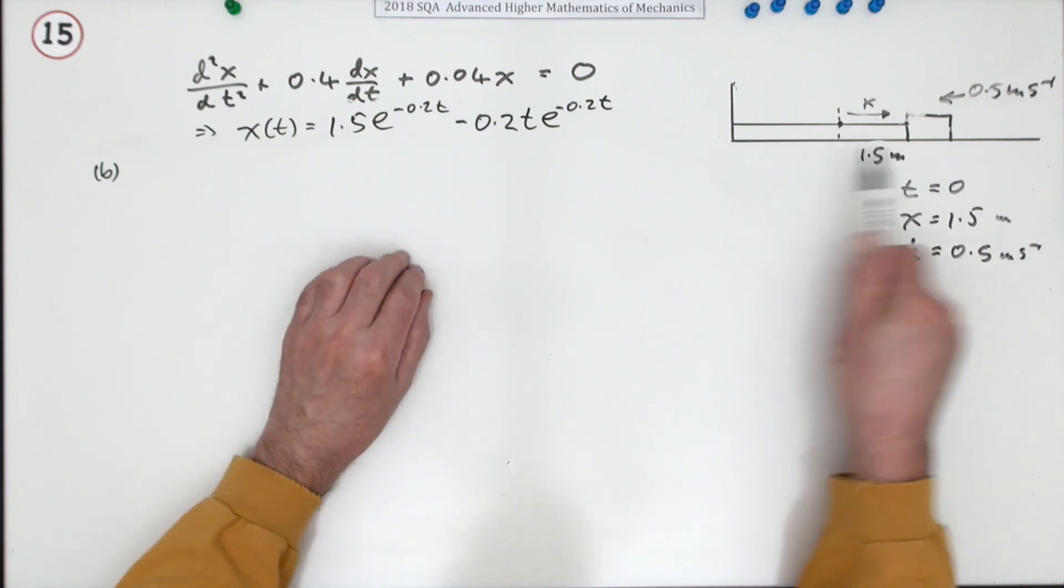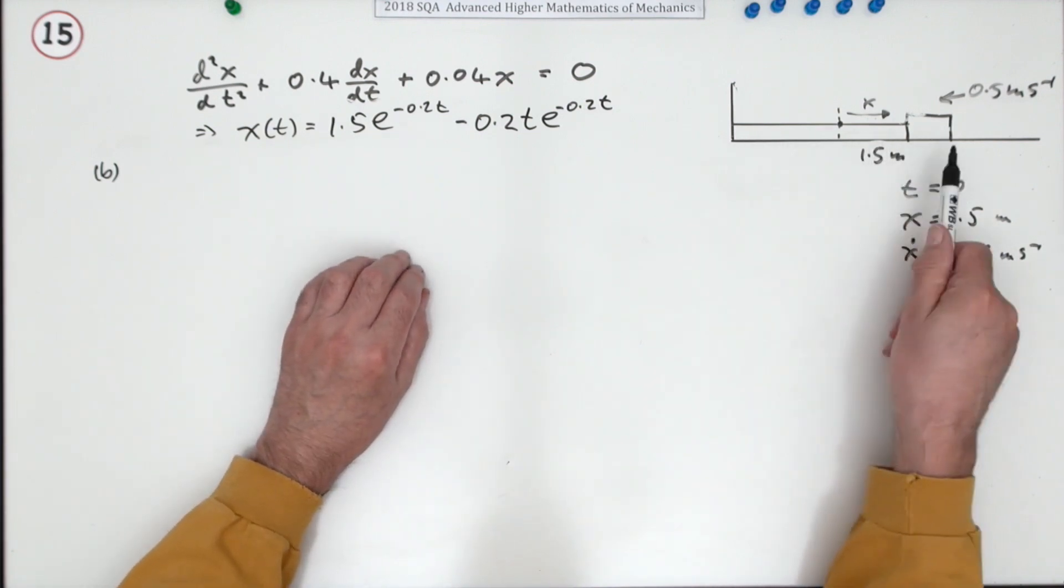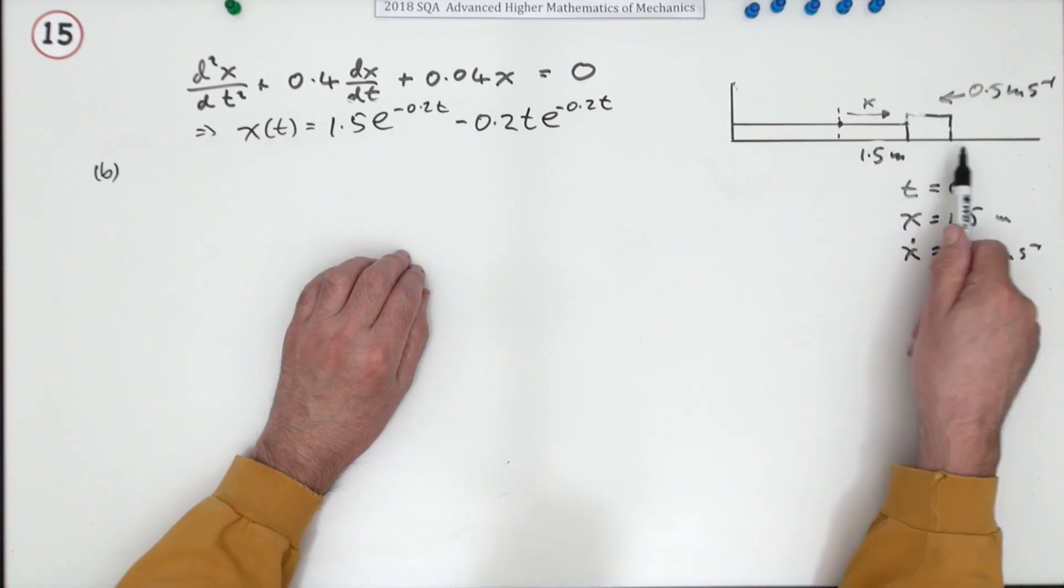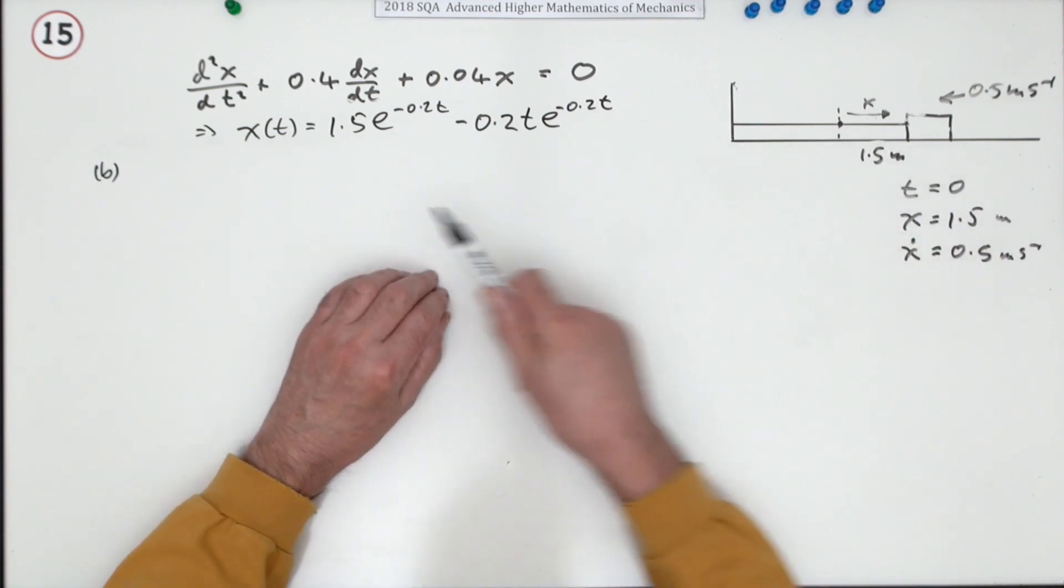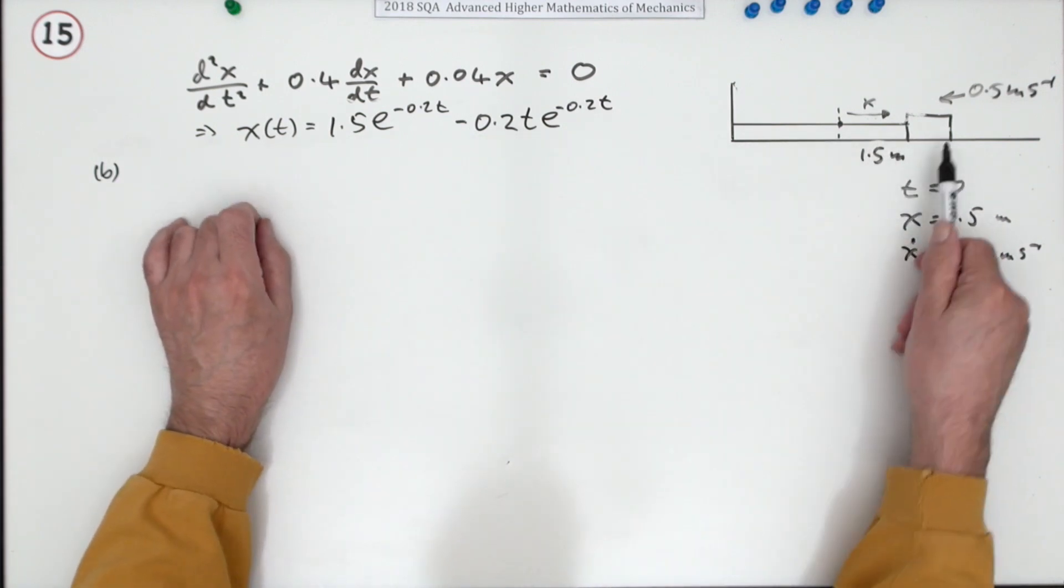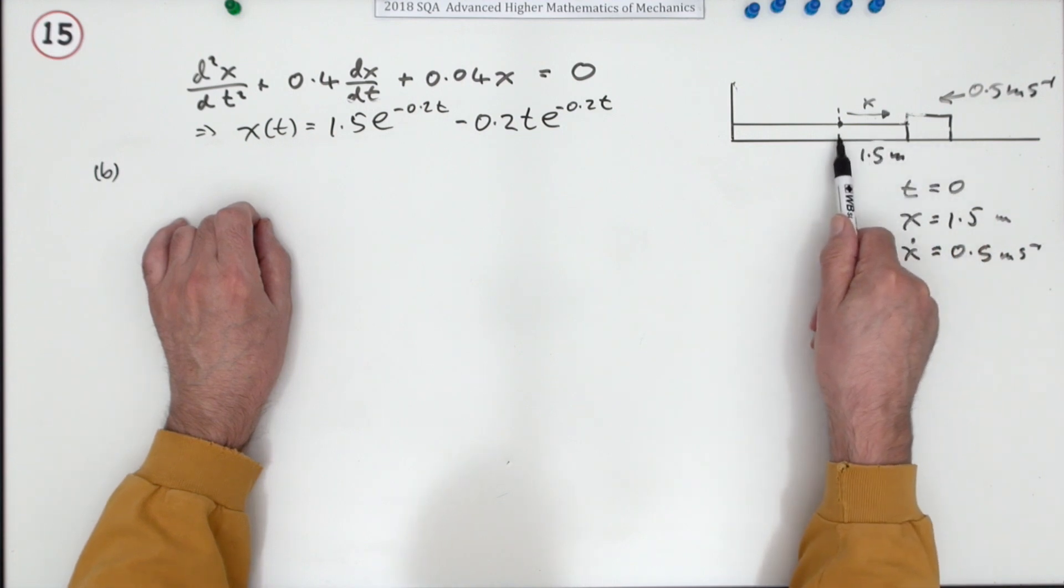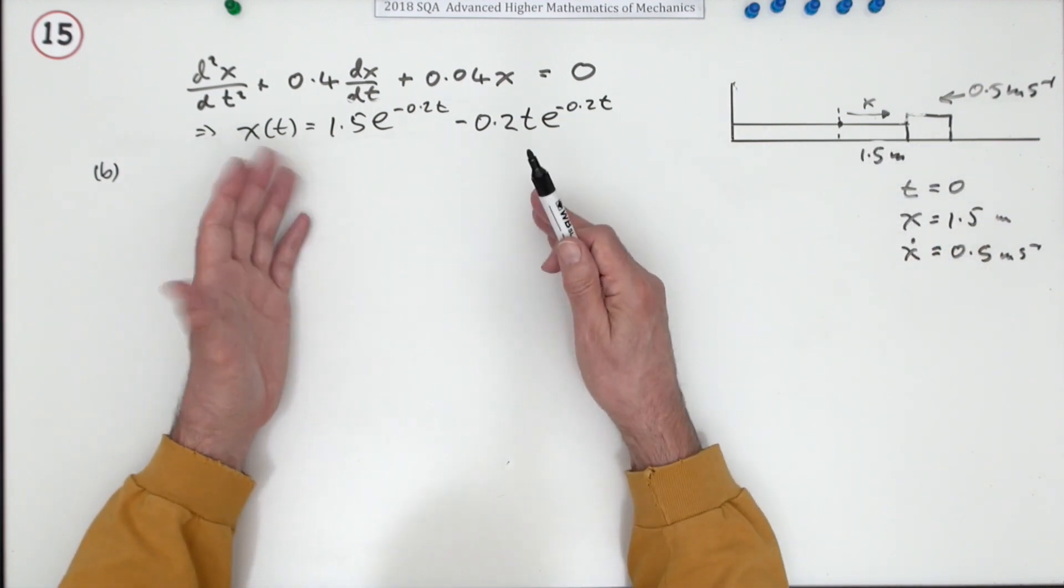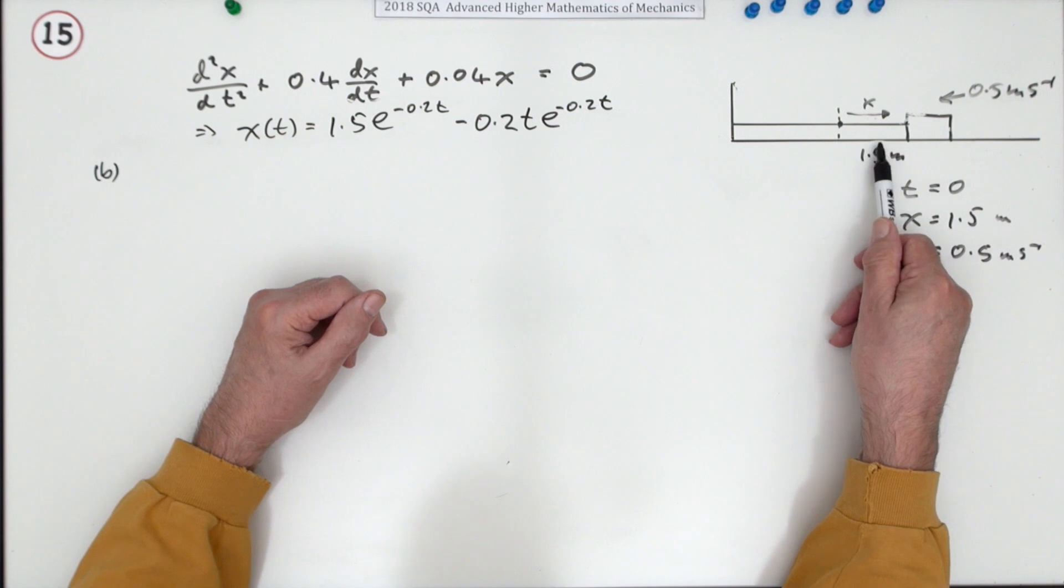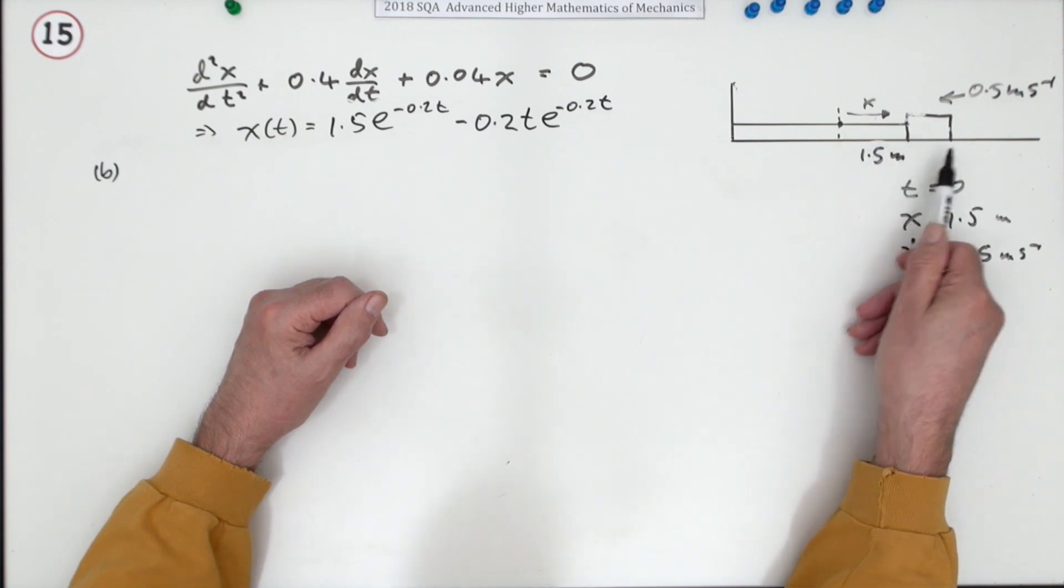Because there's no friction, it will actually go back to the original position, which simplifies the problem. Because if it did have oscillatory motion and two seconds was longer than half the period, then of course you'd have to add up the portions going forwards.